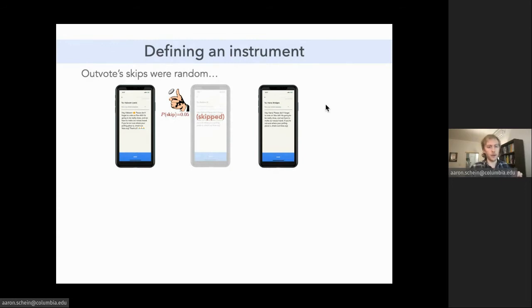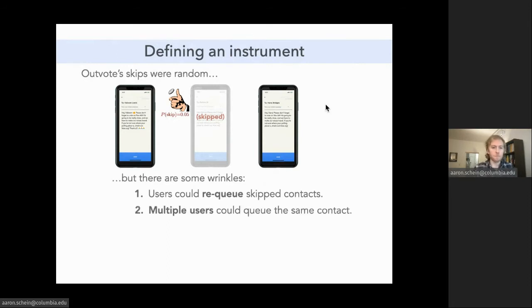We're going to use these random skips to define an instrumental variable for each subject, which we're going to interpret as a random assignment. But we have to be careful when defining these instrumental variables from these random skips for a couple reasons. First, if users notice a skipped contact in their queue, they were able to just quit the current queue and create a new queue and add that skipped contact where the contact would again only be skipped with a 5% chance. A user could just re-queue the same contact over and over enough times until they were given a chance to message them.